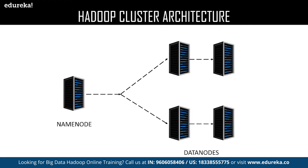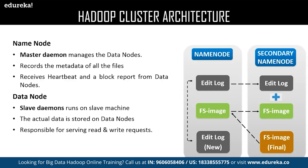Name node is responsible for running master daemons. It is designed to store the metadata — meaning the information about the actual data, or in short, the schema of the data. The name node is the first to encounter the client's request for data, then transfers the request to the data nodes which store the actual data. The name node manages the health of all data nodes by receiving a heartbeat from all data nodes at a particular interval. It also receives task status updates; if any data node fails to respond with a heartbeat, the name node considers it dead and reassigns the task to the next data node.